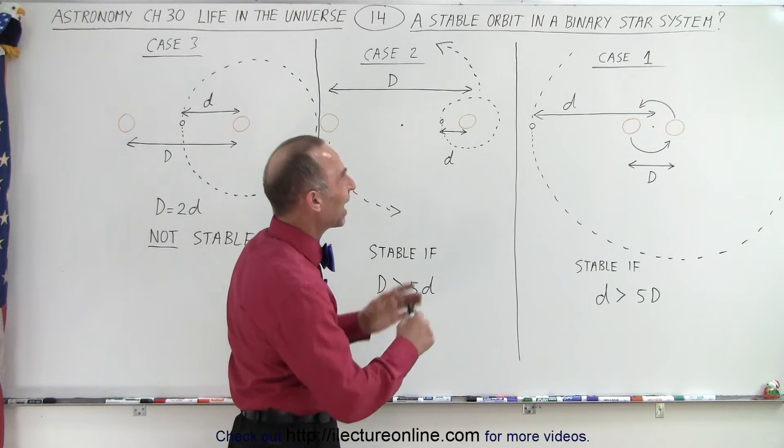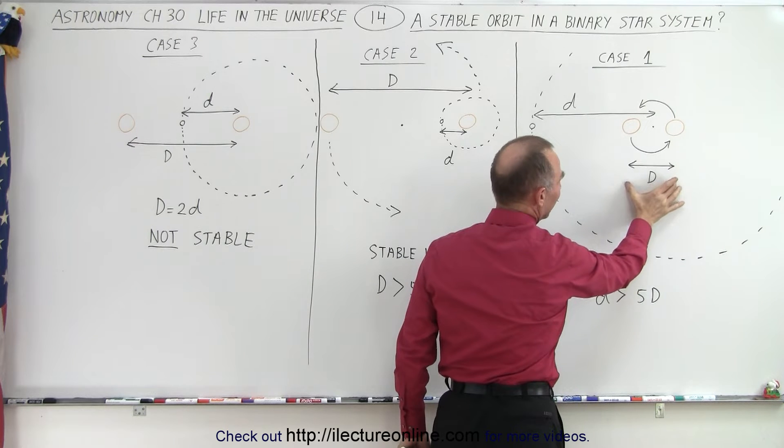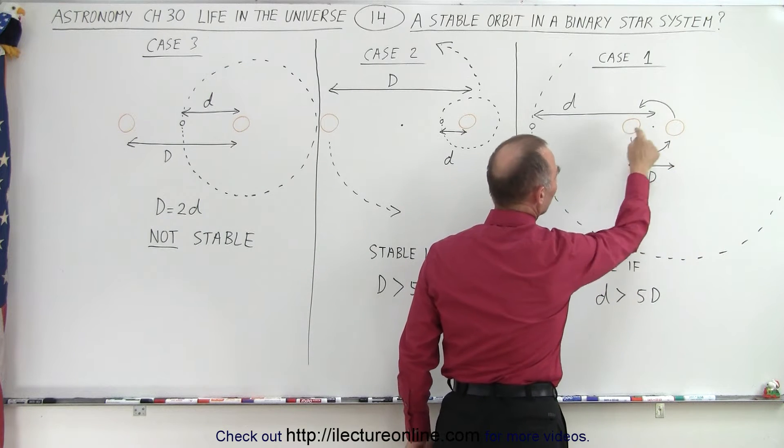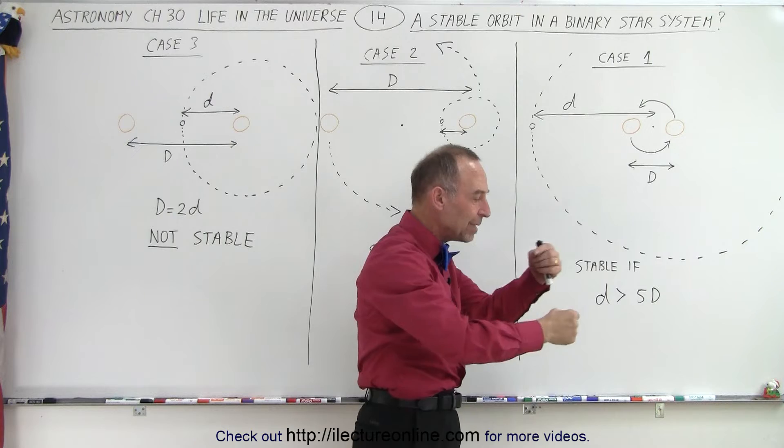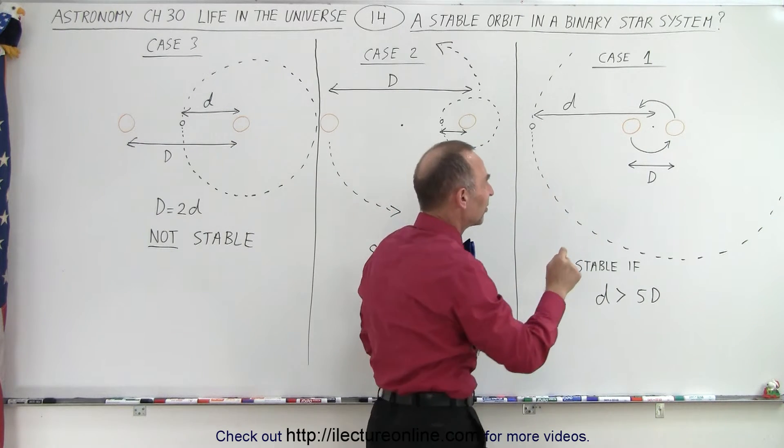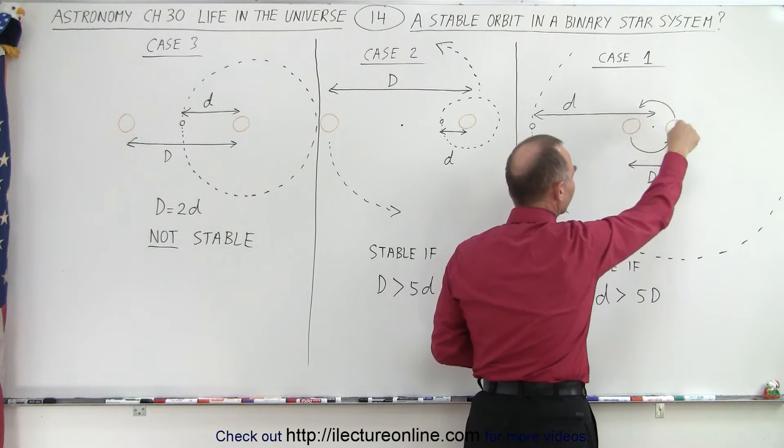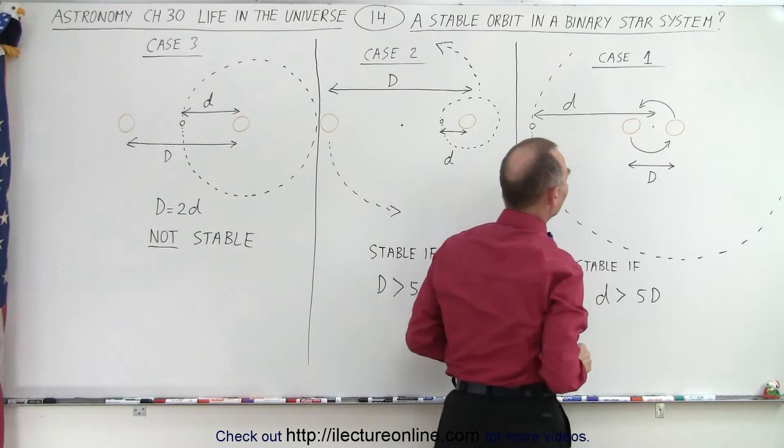So what do we have here? We have two stars and the two stars are very close together. Let the big D equal the distance between the two stars, and the two stars would then be revolving around what we call the barycenter. The barycenter is the center of mass of these two stars and the two stars would simply be revolving around the barycenter very close together.